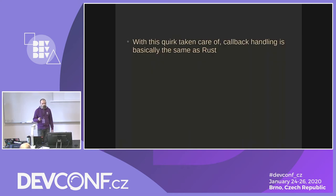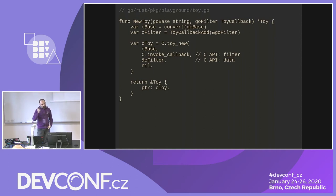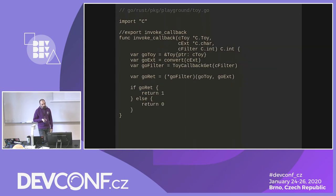With that workaround in place, we do basically the same thing as with Rust. The code looks largely the same — the only difference is that for the filter we use codeback_add to get the Go reference instead of passing it directly. In the wrapper function, conversion between C and Go means extracting the original object back from the lookup table. Everything else works the same.